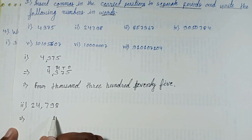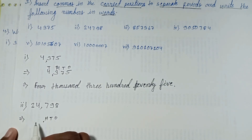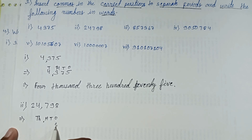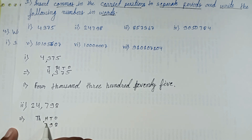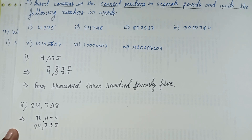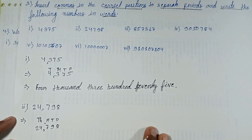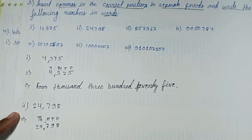Ones, tens, hundreds — ones place put the 8, tens place put 9, hundreds place put the 7, thousands place put 4, then 2 in ten-thousands place. Write in word form.